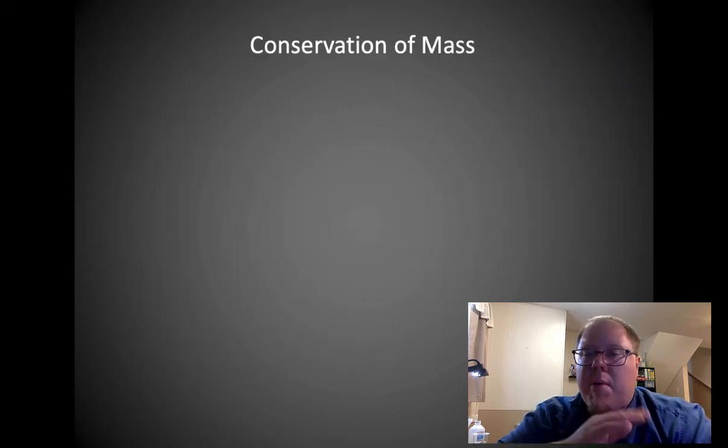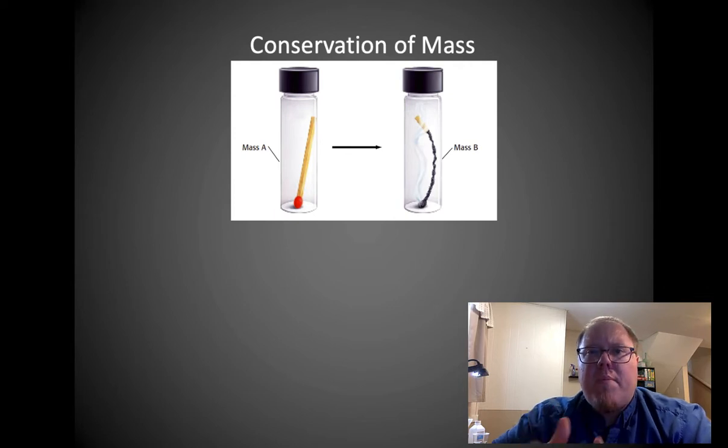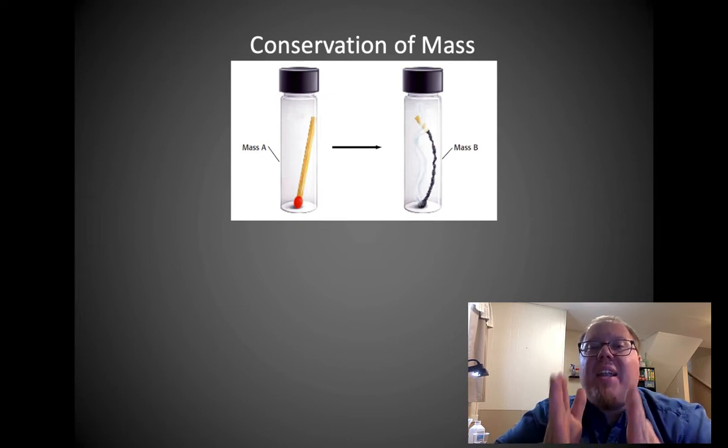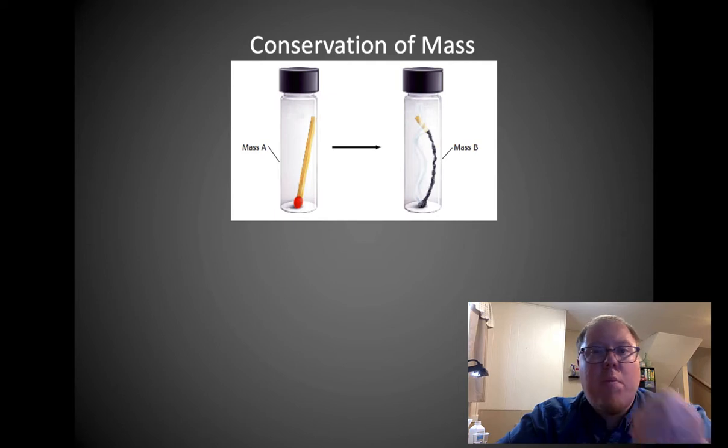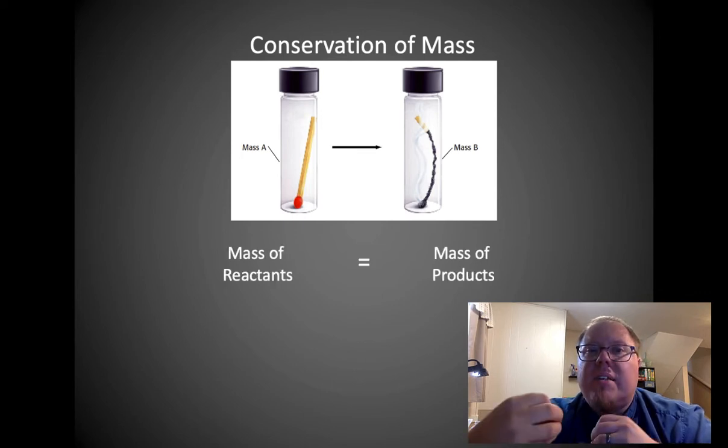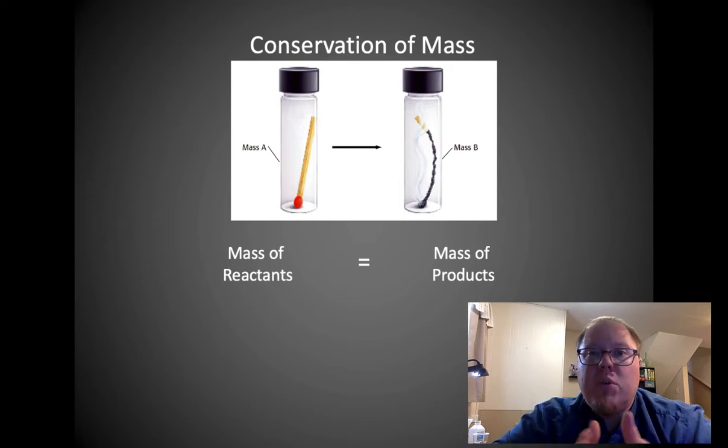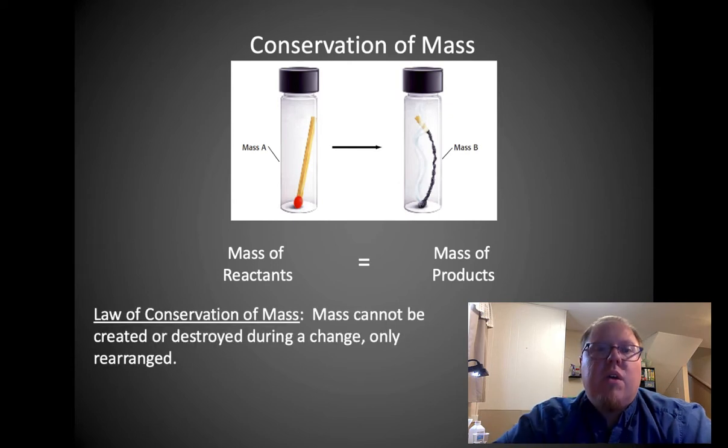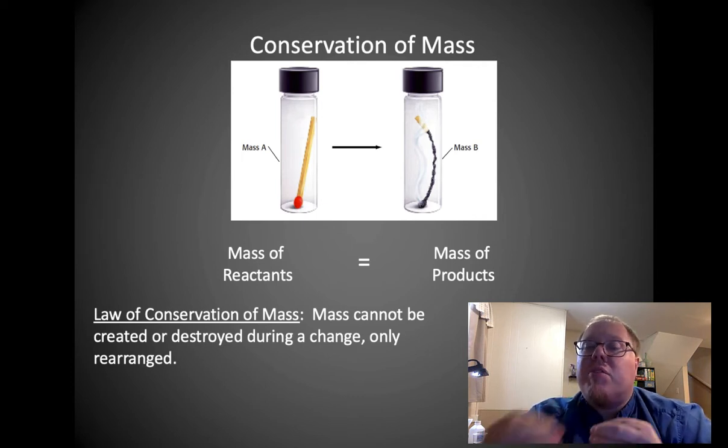The conservation of mass is that stuff remains stuff. If I were to burn a match, it would turn into ash, carbon dioxide, and other things. But if I collect all the material it turned into, including the smoke and carbon dioxide that float into the air and seal it in a container, it would weigh exactly the same before as after. Nothing would change in terms of mass. Stuff remains stuff and we don't lose any, we don't destroy any. Mass cannot be created or destroyed during a change, it can only be rearranged.